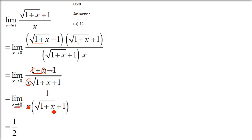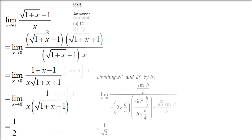Now x is tending to 0, so apply it here. x becomes 0, so 1 plus 0 is 1, and root 1 is 1. So the denominator is 1 plus 1, giving 1 by 2. This is 1 by 2 as the answer.